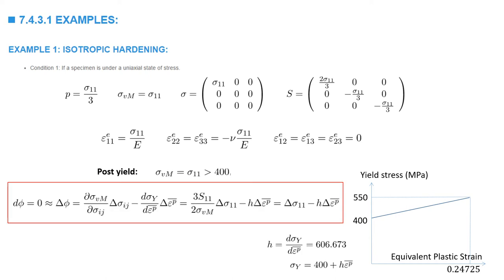We start with the consistency condition: delta_f equals zero. This gives: (partial sigma_von_Mises / partial sigma_ij) times delta_sigma_ij, summed over ij, minus the slope H times delta equivalent plastic strain equals zero. Since only sigma_1 varies, we have (3/2)(S_11 / sigma_von_Mises) times delta_sigma_1 minus H times delta epsilon_plastic equals zero. Since S_11 divided by sigma_von_Mises evaluates to 1 in this case, this simplifies to: delta_sigma_1 minus H times delta epsilon_plastic equals zero.